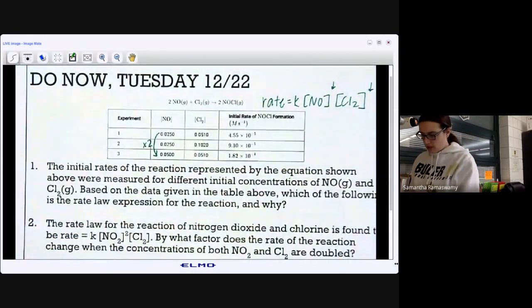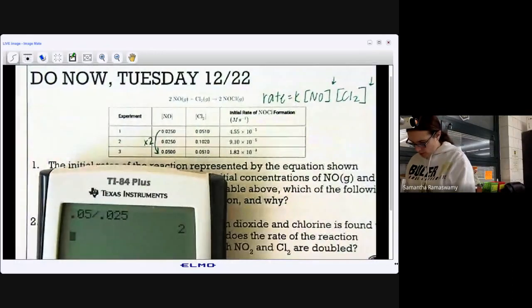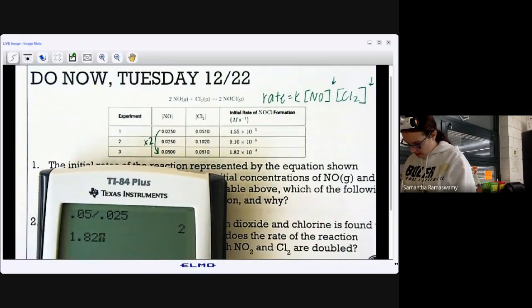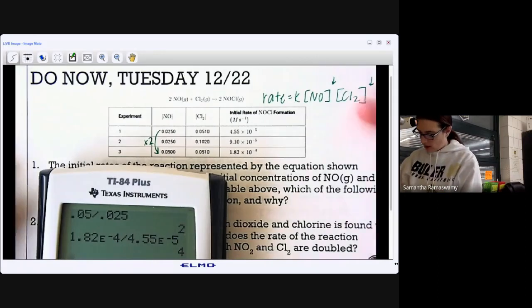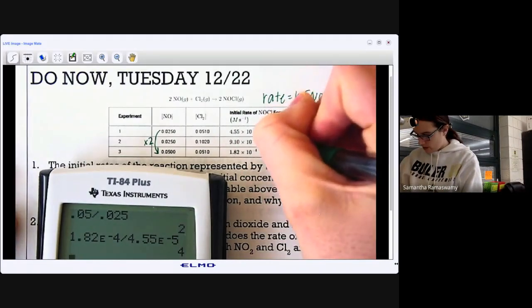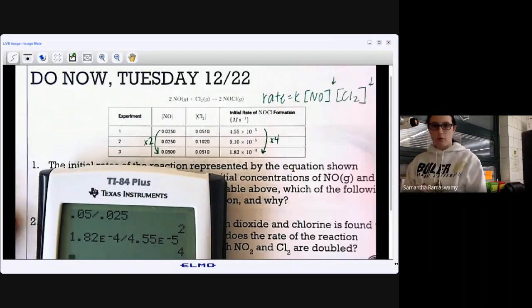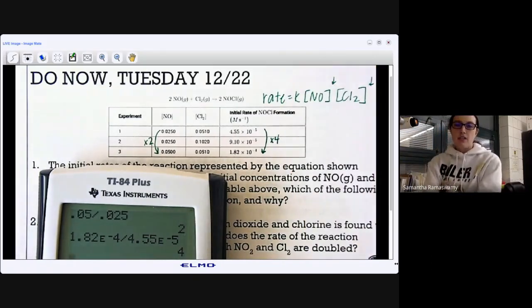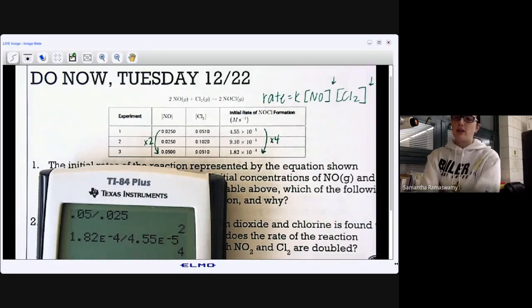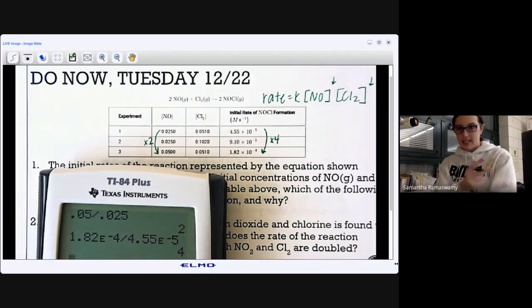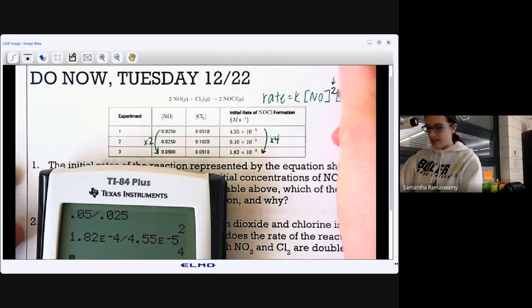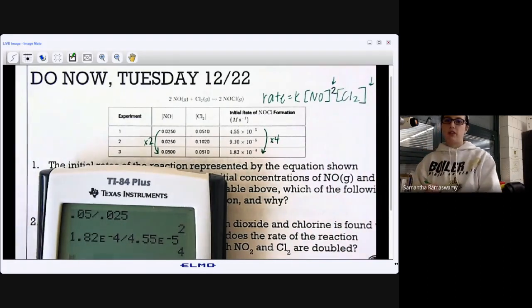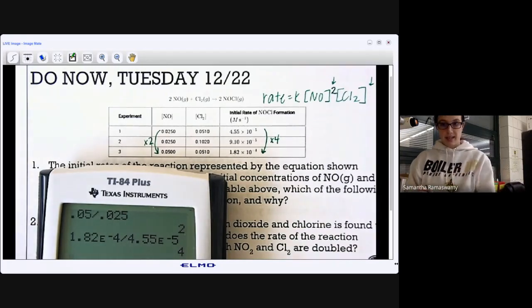So let's do the same thing with the rates. 1.82e to the negative 4 divided by 4.55e negative 5. So when the concentration doubles, the rate quadruples. So when the concentration doubles, the rate quadruples, that's second order. So we would say the reaction is second order with respect to NO. That means that NO is second order.